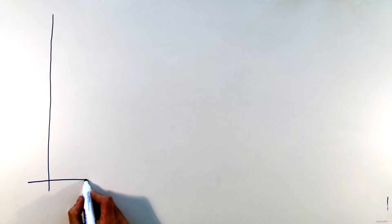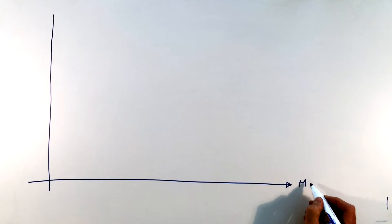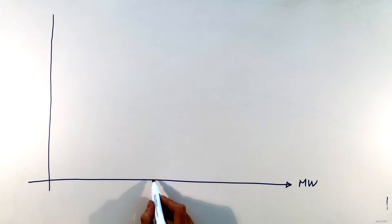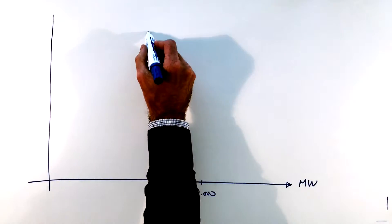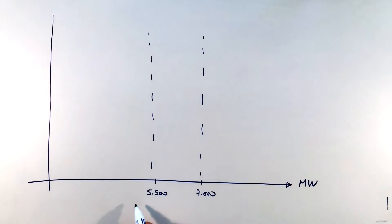We will start with demand. On the horizontal axis are the megawatts that are going to be consumed. So in the SIC currently demand varies between 5,500 megawatts and 7,000 megawatts. Lowest demand is at night when people sleep and the highest demand is in the late evening when people are at home watching TV and cooking.